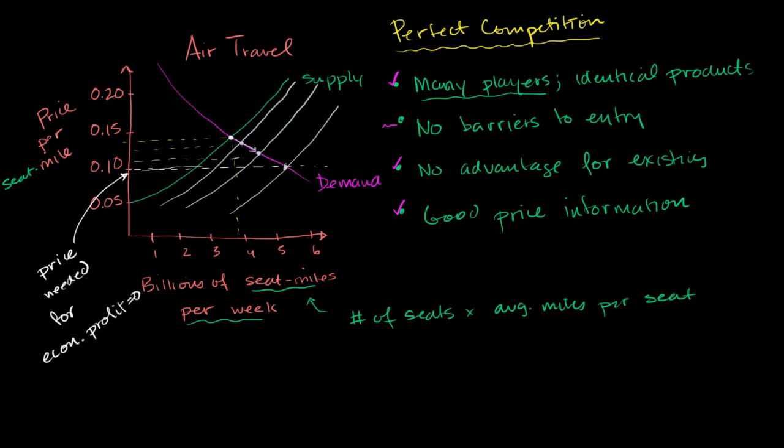In the last video, we saw that if we had a market with perfect competition, and if the current short-term equilibrium price is above the price at which firms would be generating economic profit, then more and more firms would start entering. Because if the economic profit is positive, then that means it's a better place to use your resources than whatever your opportunity cost is, that you're making profit above and beyond your opportunity costs. So more and more people enter it.